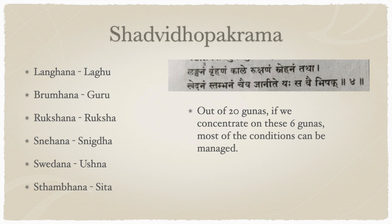Langana imparts lagu nature to the body; brahmaana imparts guru nature; rukshana makes the body dry; snehana makes it more snigtha; swedhana is ushna; and stambhana is shita. If we know these six gunas perfectly, we can treat any condition. For example, if there is too much snigtha, we do rukshana — like udvartana. If there is stambhana or shita in the body, we do swedhana. If there is too much gurutvam, we use lagu; if too much lagutvam, we give guru.